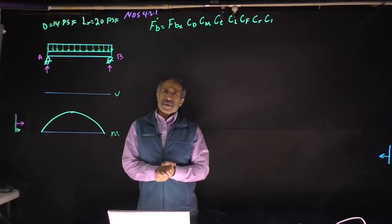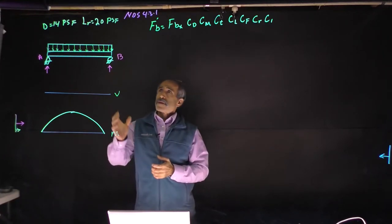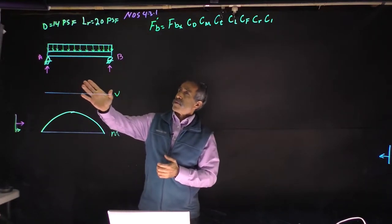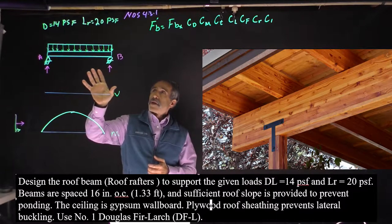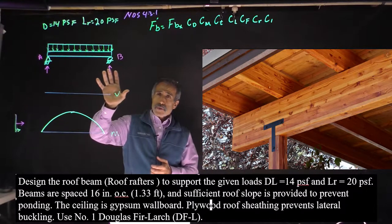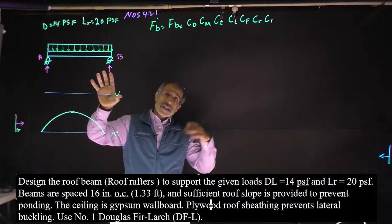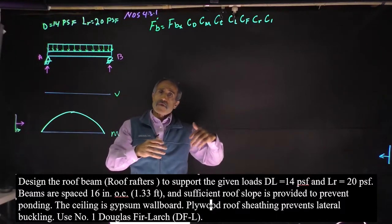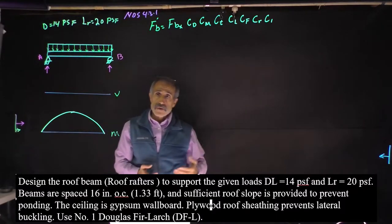Welcome back to another lecture. We're going to do another wood beam design. This is a roof beam subjected to 14 pounds per square foot dead load and a roof live load of 20 pounds per square foot. We're going to size this beam with this loading, and then later come back to size it for north, which adds some snow load, giving us a different size.